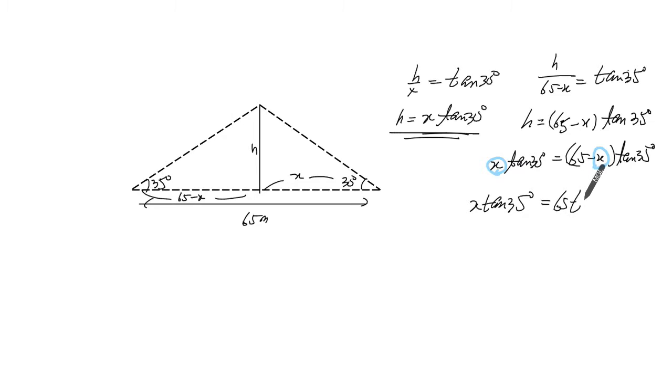So 65 times by tangent of, this is actually 30, right? Mixing the 35 with 30. So my terrible handwriting.